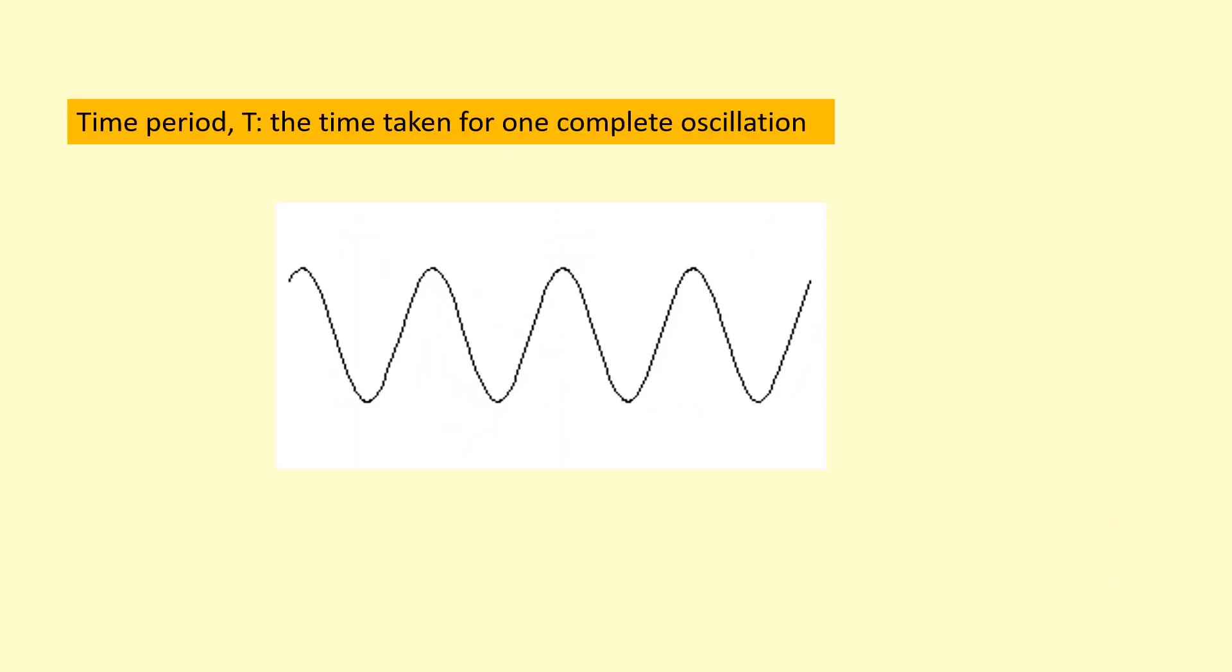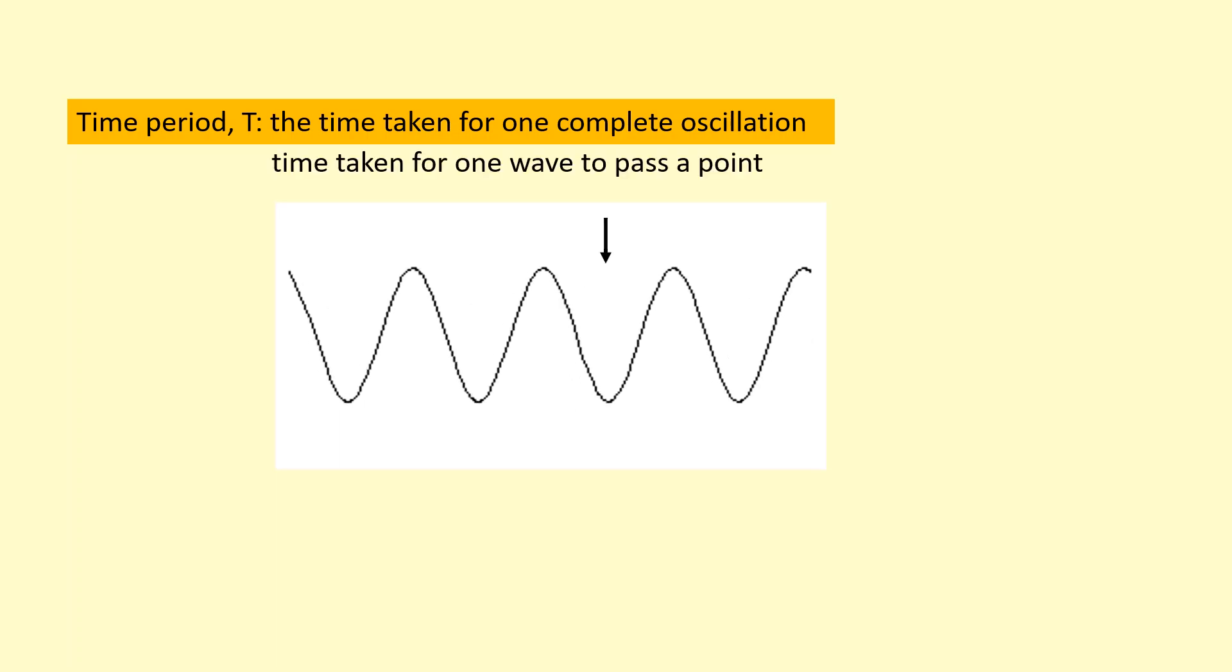Another important quantity is the time period, which is the time taken for one complete oscillation. Another way of interpreting this is as the time taken for one wave to pass a point. So for example, if I mark a point like this and time how long it takes for a wave to pass, that will give me the time period in seconds.